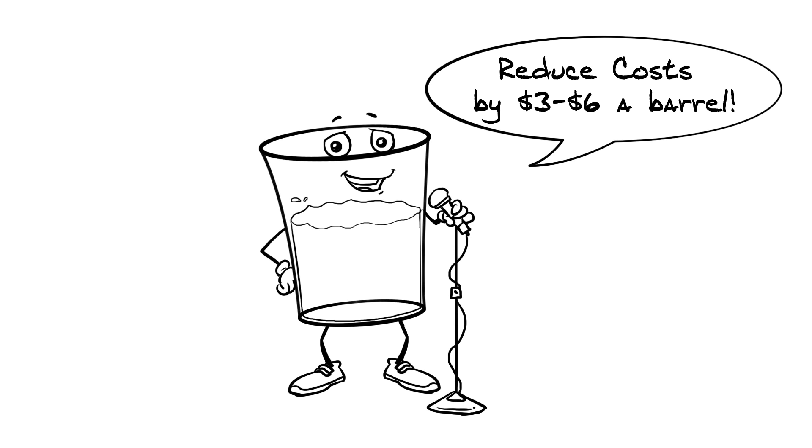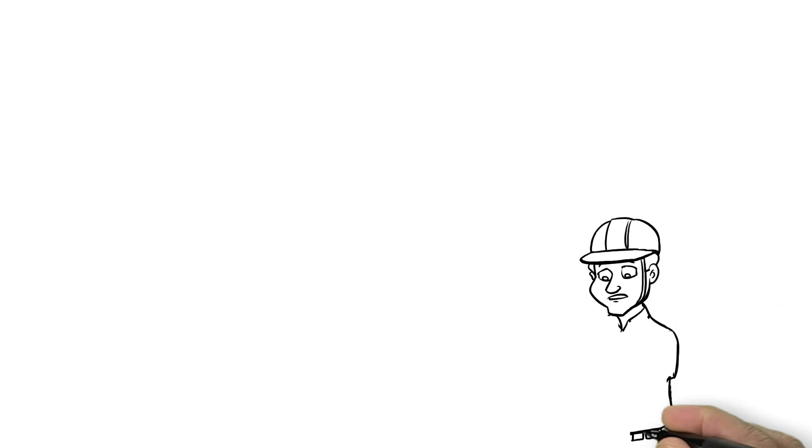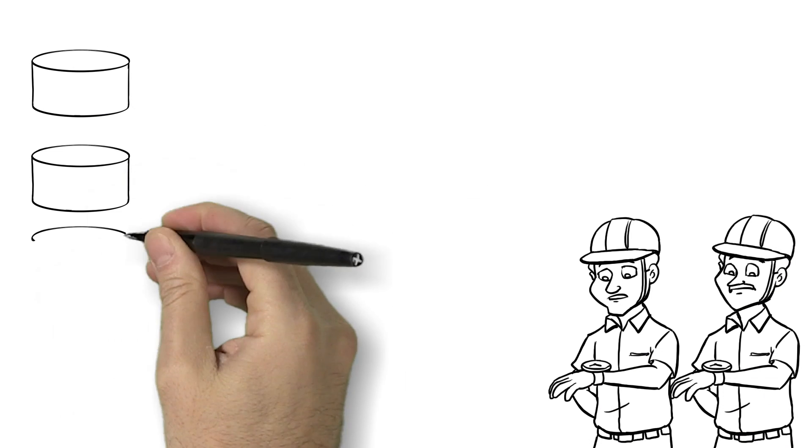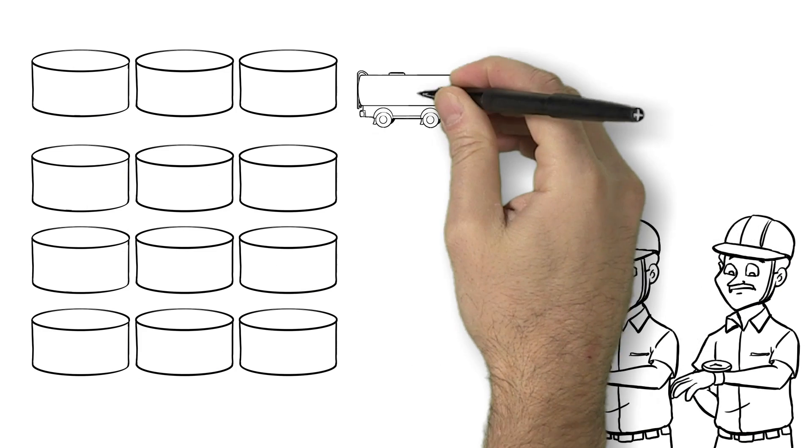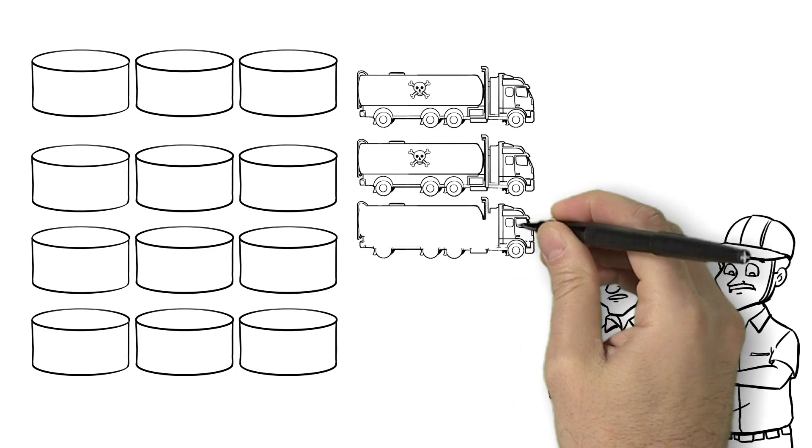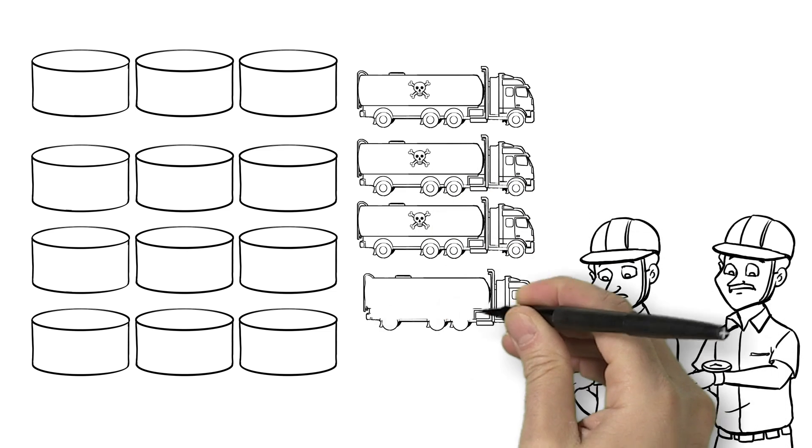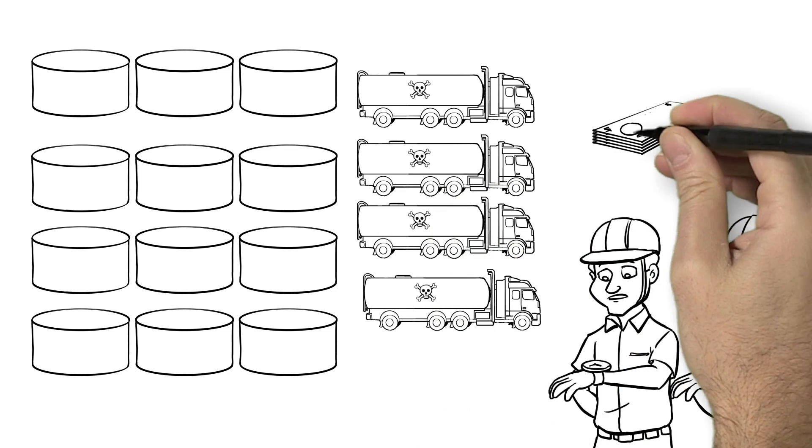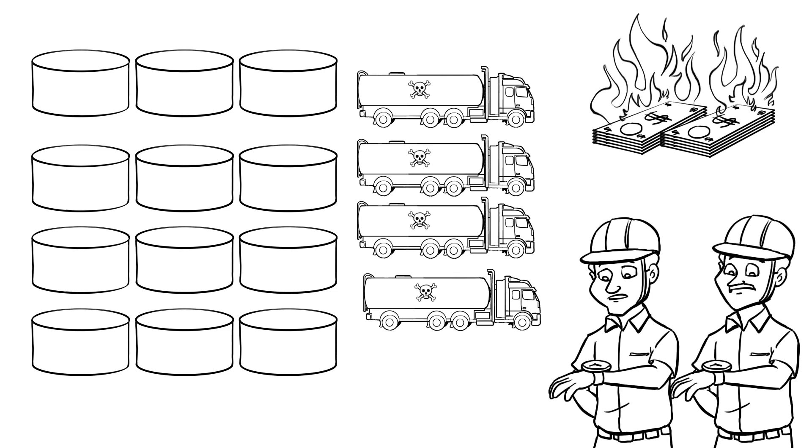So what are the options? Well, we have a lot of antiquated ways to treat flowback water. These typically require a lot of chemicals and you're stuck with gravity settling tanks. That's a lot of tankage and a lot of real estate being used while you wait and wait.